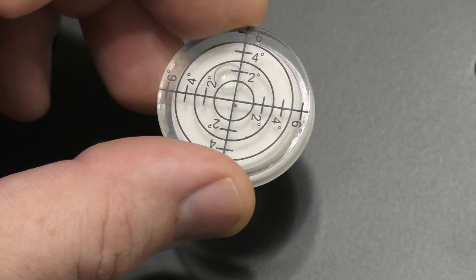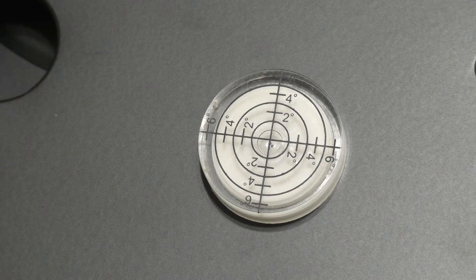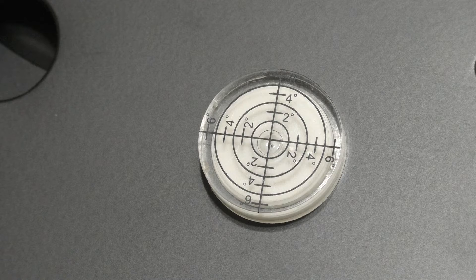When playing back records, it's important to make sure that your turntable is level. This can be done with a low cost bubble level like this one. When the bubble is in the center, your turntable is level.